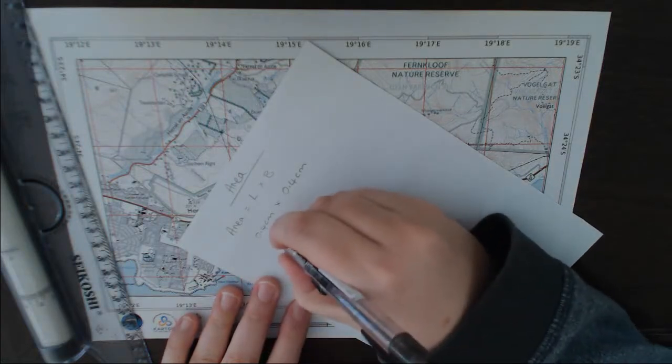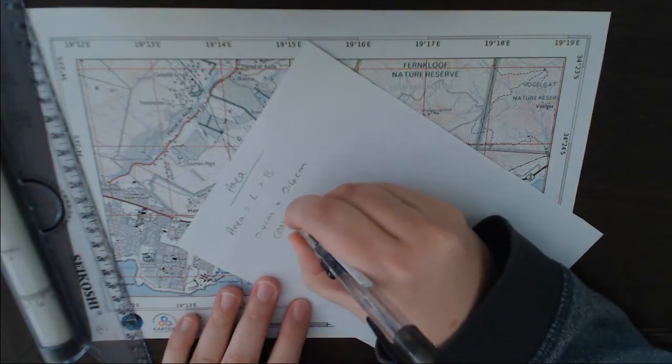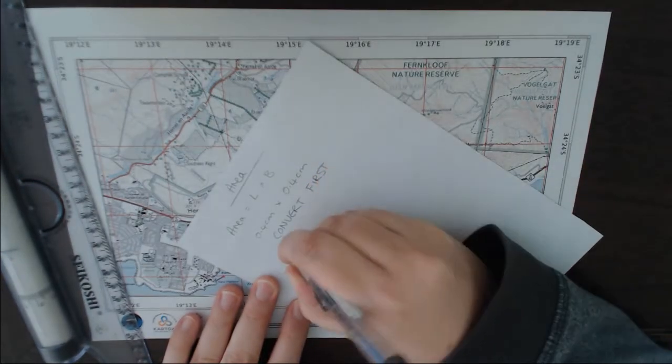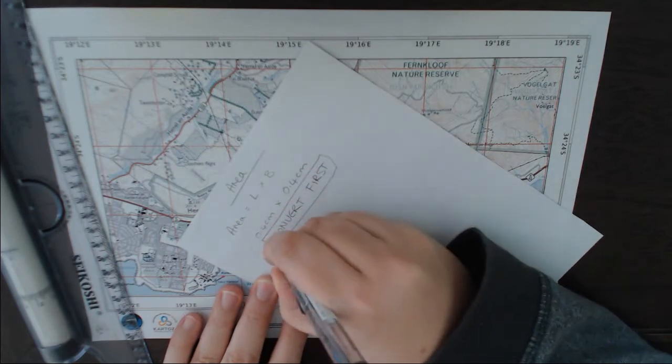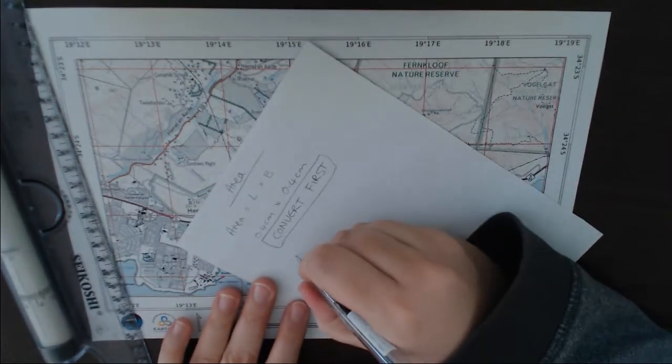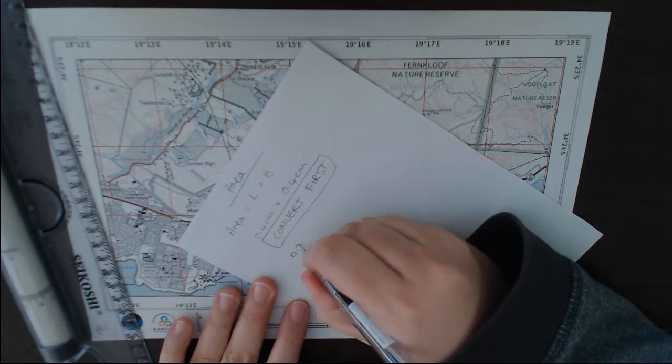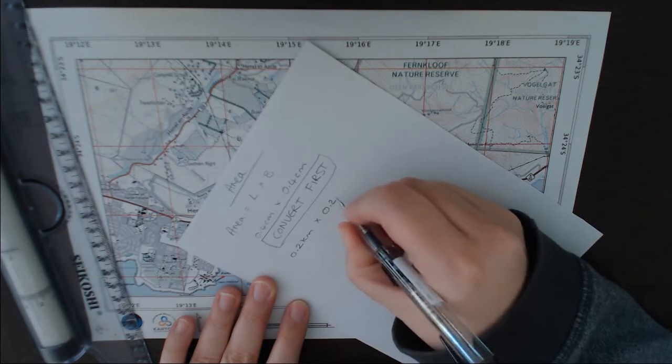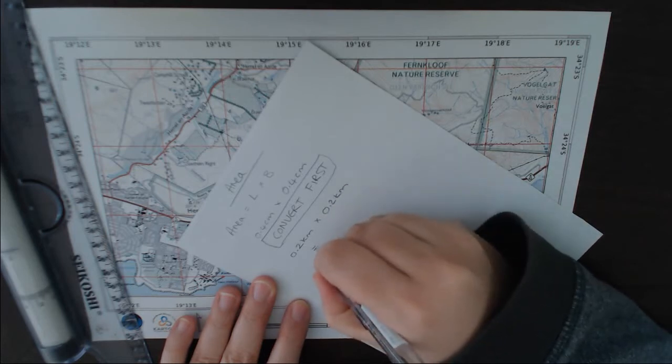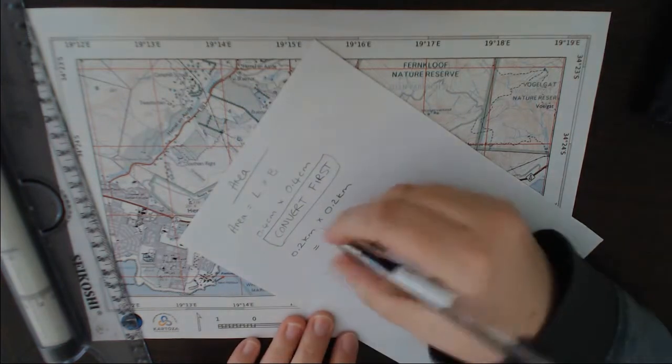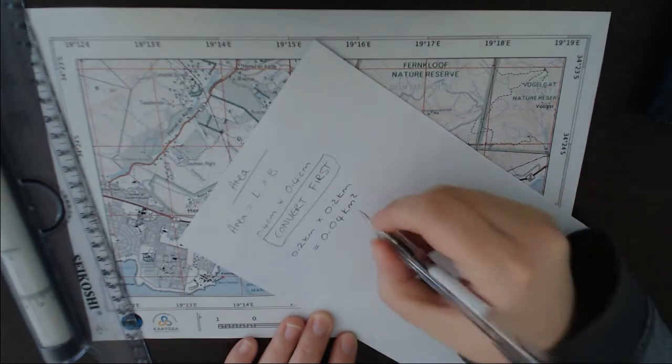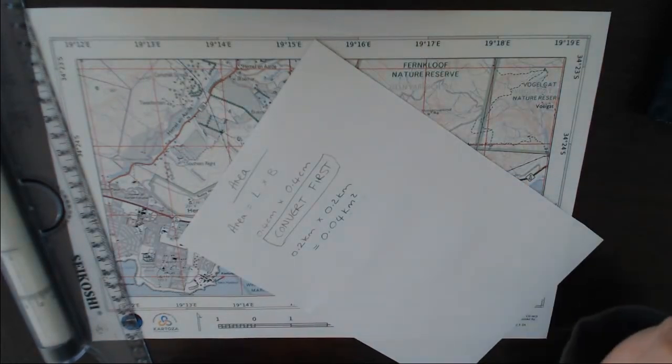First thing is convert first. This is our important step that sometimes gets forgotten, but it's super important. We convert our centimeters to kilometers first. So 0.2 kilometers times 0.2 kilometers is equal to 0.04 kilometers squared. You have to add the squared, otherwise you will not get that mark.